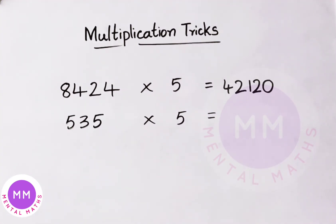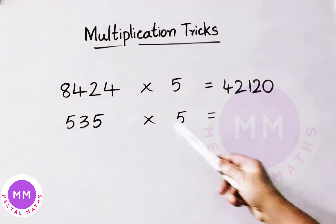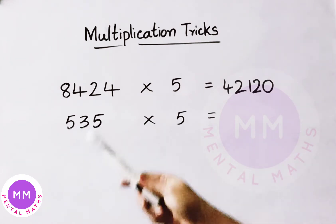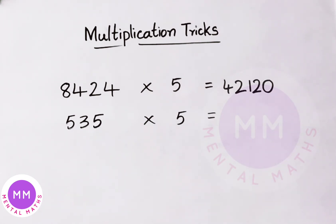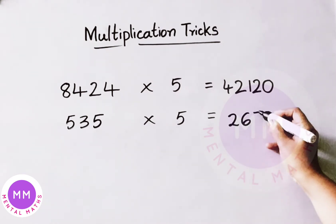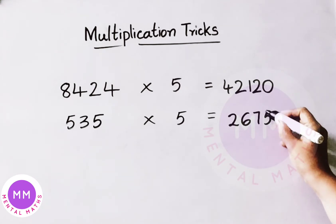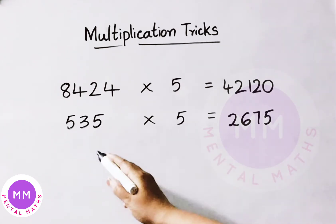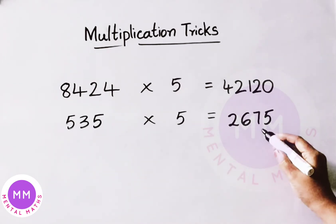See here the next example: 535 multiplied by 5. Take the number before 535, that is 534. Half of 534 is 267. Now write down 5 at last. So 535 multiplied by 5, the answer is 2675.